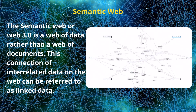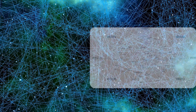In Semantic Web, or Web 3.0, we aim to have a connection between data and information rather than just between documents. So when a piece of information is updated in a specific web page or document, all corresponding pages where the data is linked also get updated automatically. This is also known as the Data Web or Web of Data.